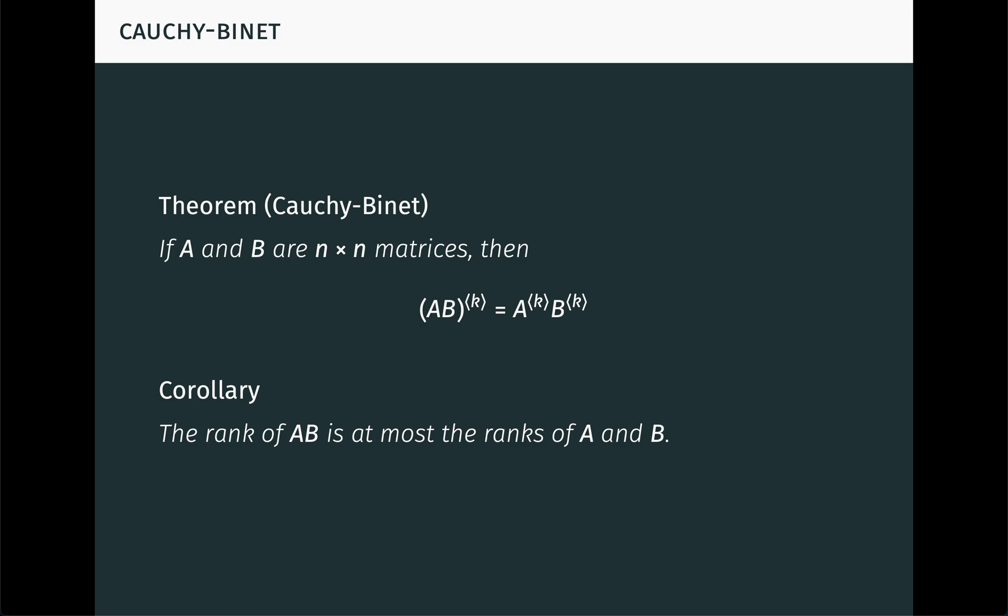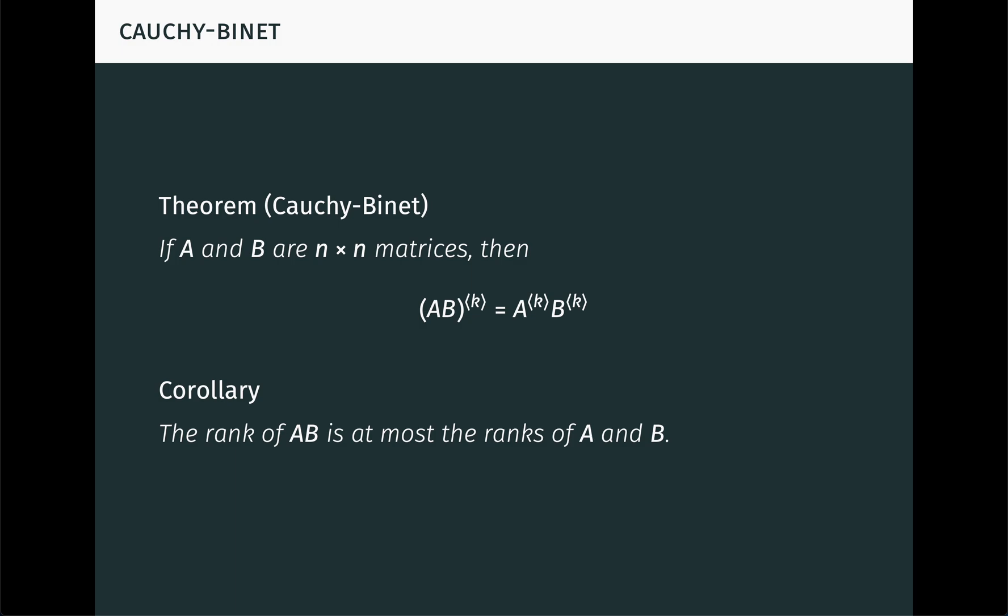Given that the compound power behaves algebraically like a power, this raises a question. Is there a natural product operation, which we'll here denote by a box, on n by n matrices, such that the kth compound power of A is equal to A times itself k times under this operation? If so, what is the definition of the k-ary product of arbitrary n by n matrices A₁ through A_k?